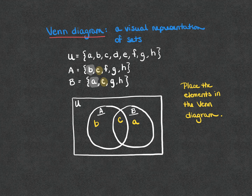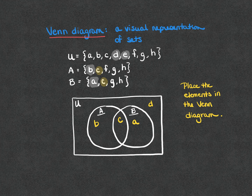Moving on to element D — the only place we see element D is in the universal set. It is not in subset A or B. So element D belongs outside of the subsets A and B but still within the universal set. This is also true for element E: E is not found in either one of the subsets, so we place E outside of the subsets A and B as well.